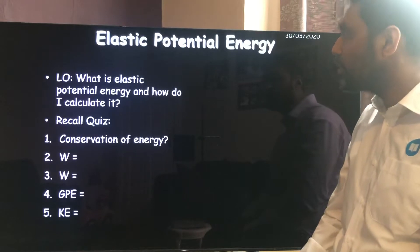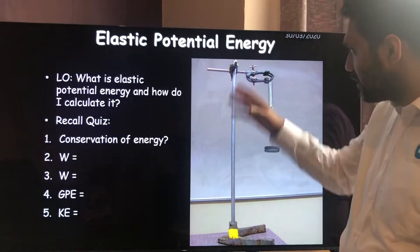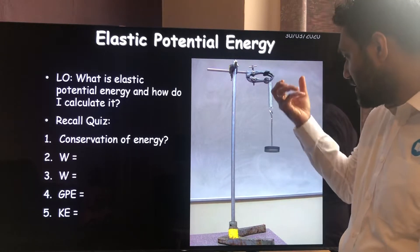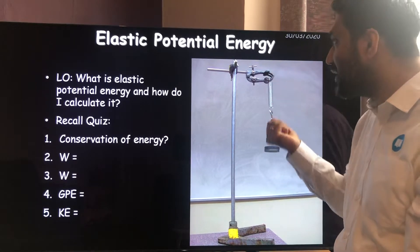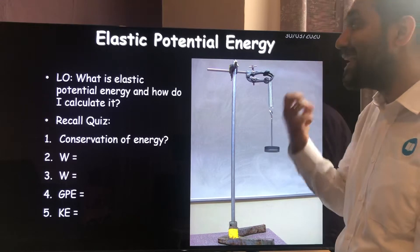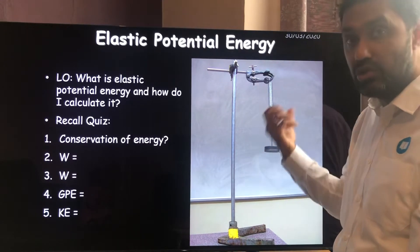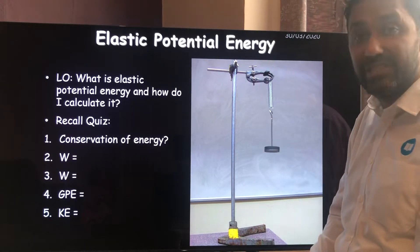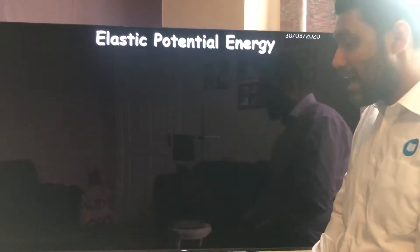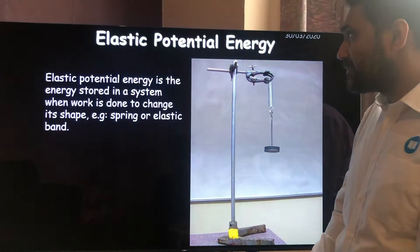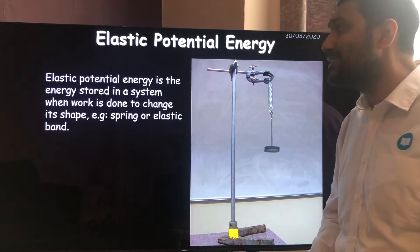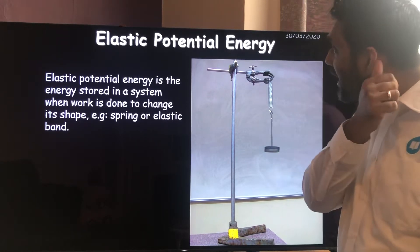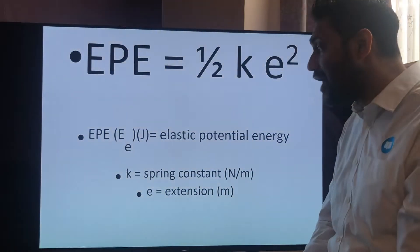Your fourth equation is based on this practical. You've got a clamp and stand with a spring. You add a weight — slotted masses — and the weight is the force pulling on the spring. The spring will gain elastic potential energy store. The more you pull it, the greater the force, the greater the elastic potential energy stored in the spring. Elastic potential energy is the energy stored in the system when work is done to change its shape, for example in a spring or an elastic band.